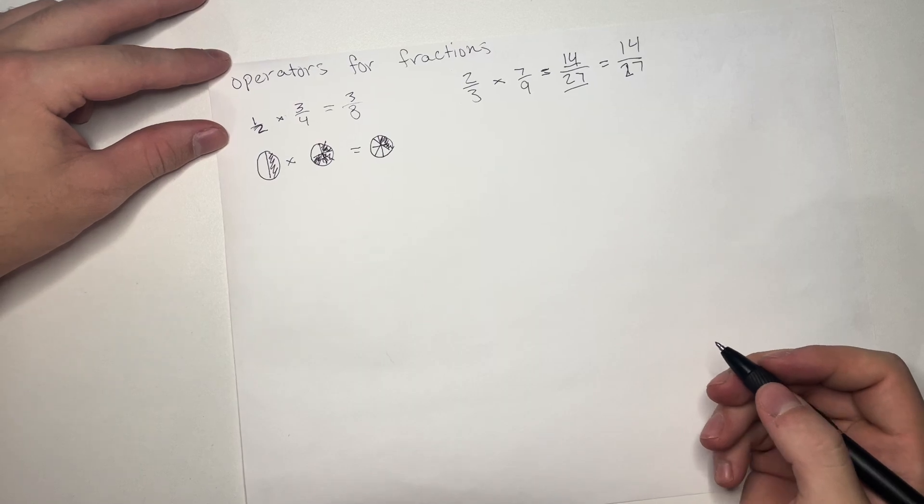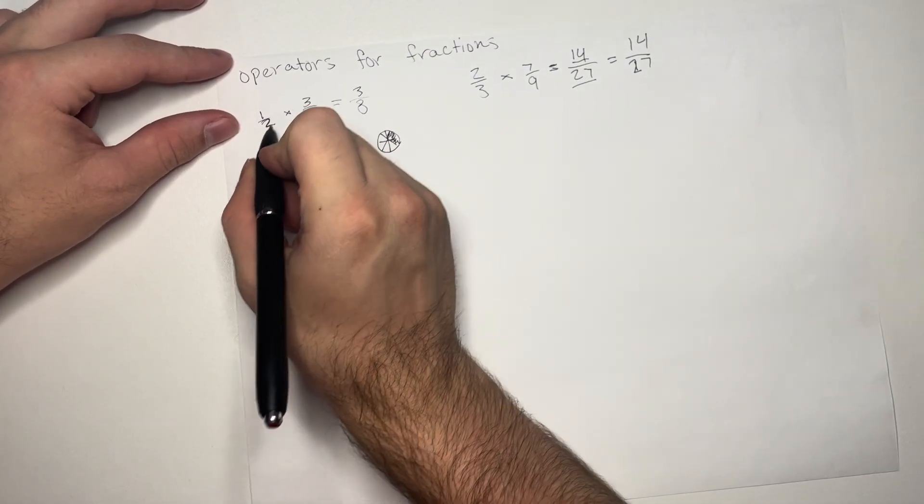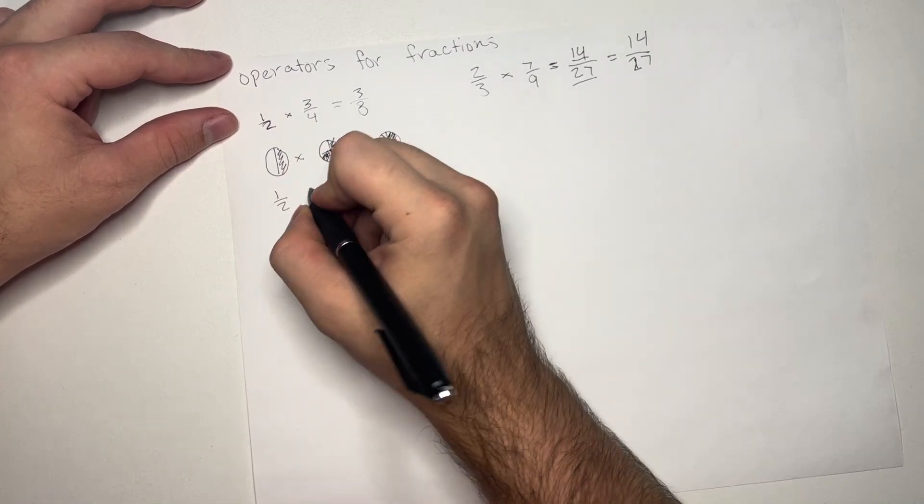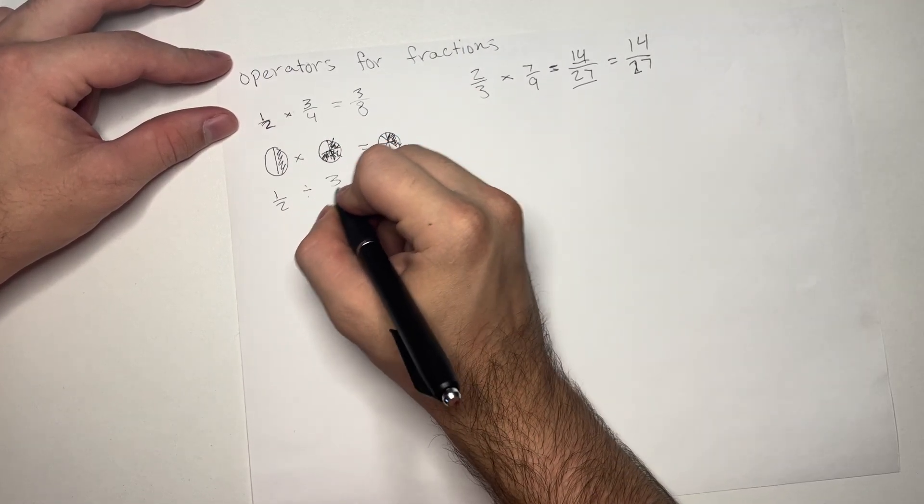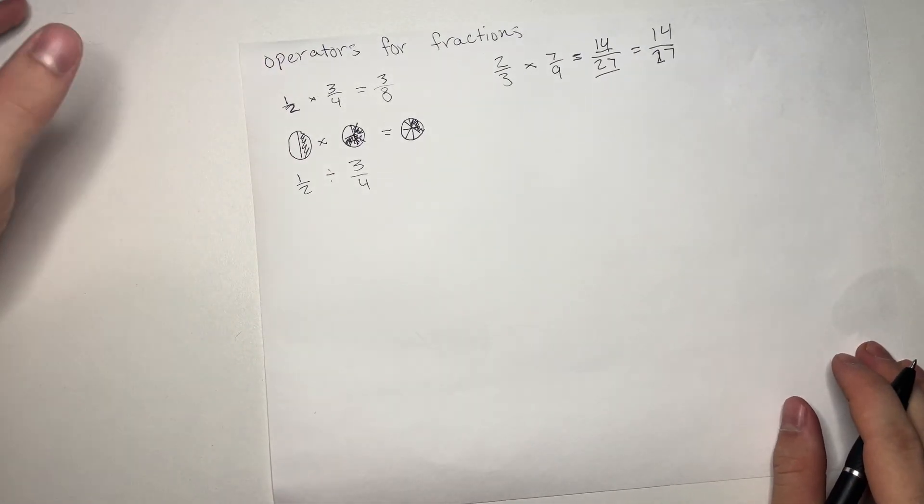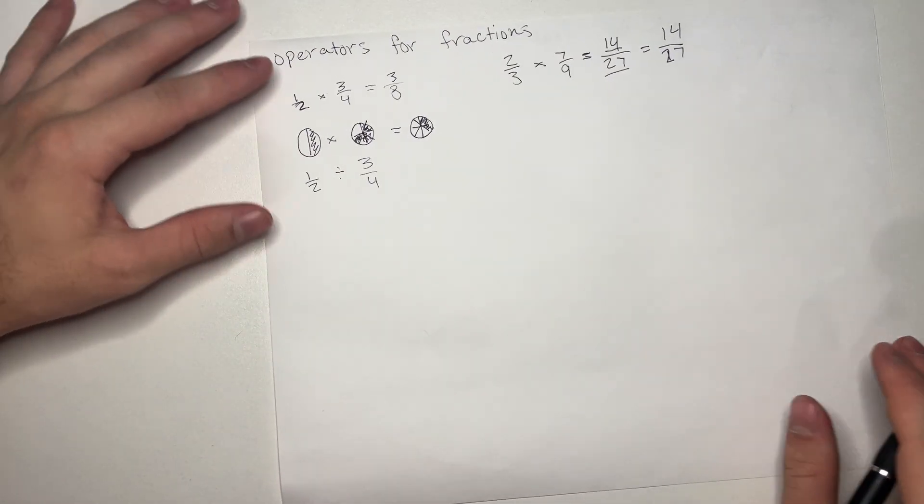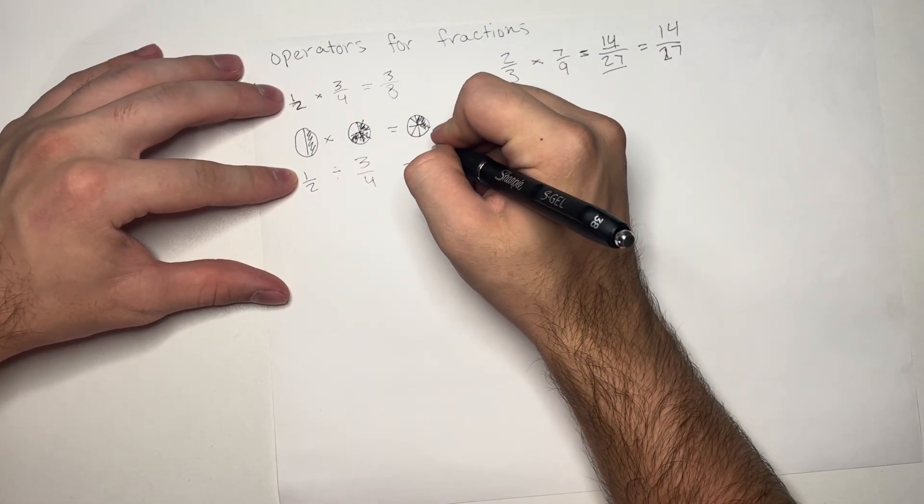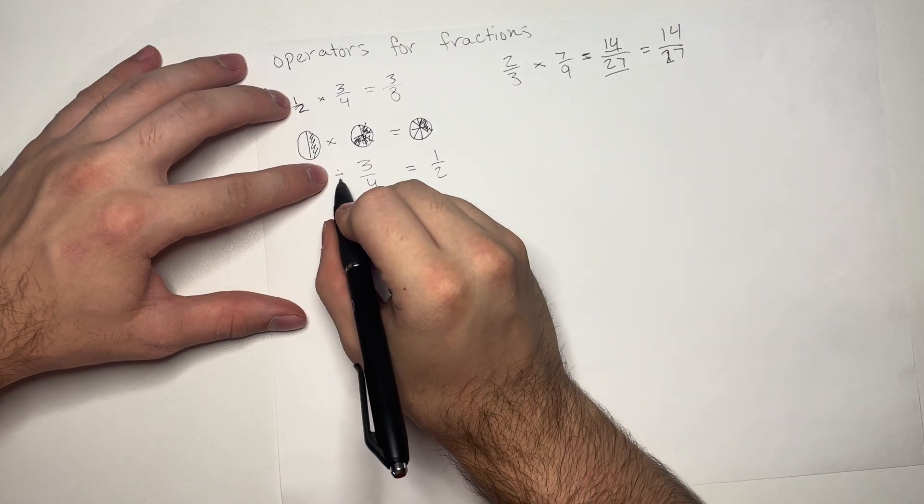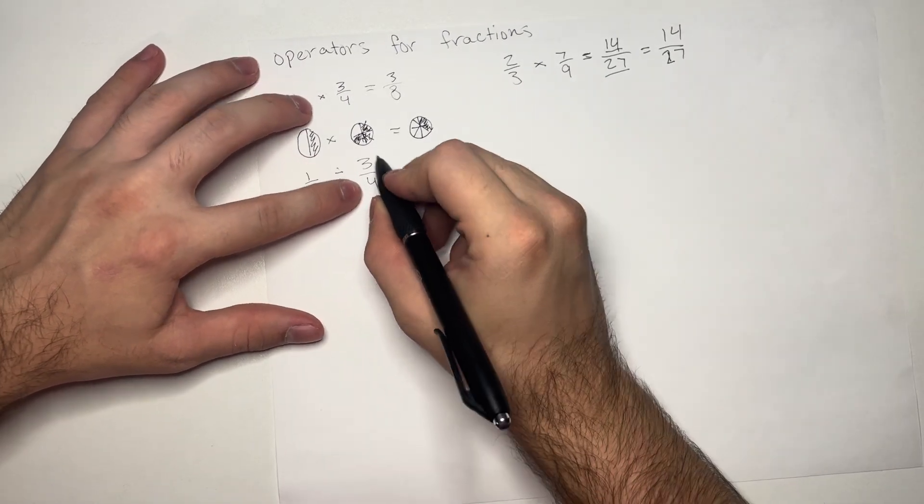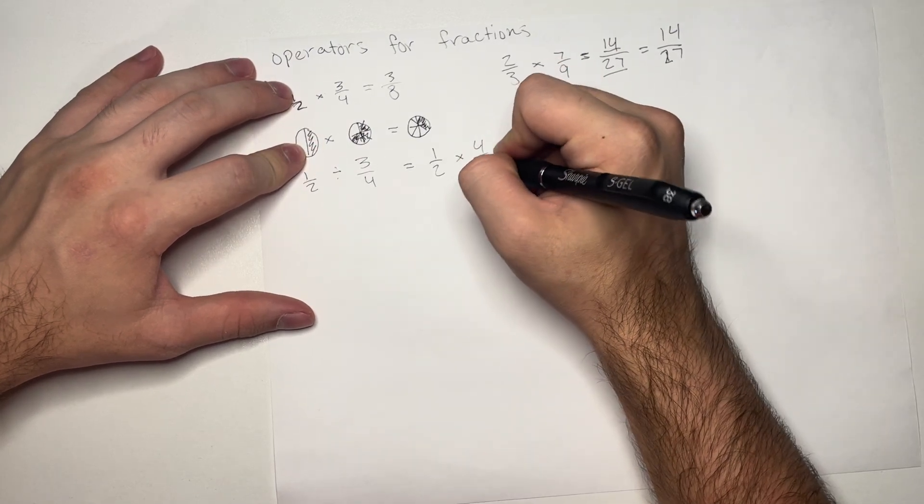Now, let's go ahead and talk about division. I'm going to use these same numbers here. So, 1 half divided by 3 over 4. And so, there's a simple rule that we do here. We keep this as 1 half. We change this sign into multiplication sign. And then, we flip this to be 4 over 3.